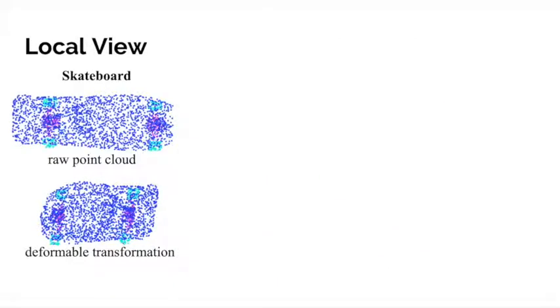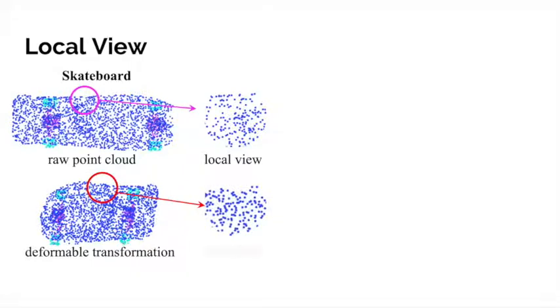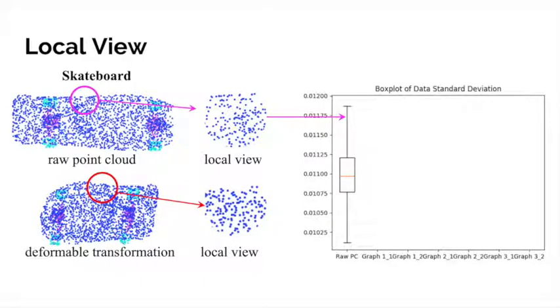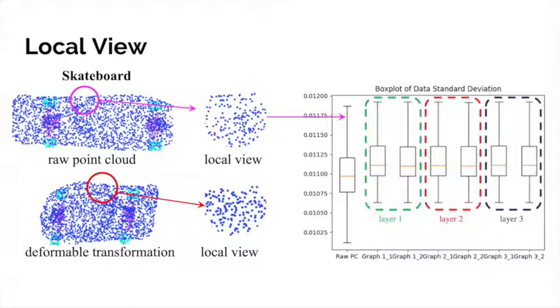We also provide a local view of the transformation. When zooming in, we find the raw point cloud is actually imbalanced. This can be hard for neighbor search based on k-nearest neighbors. With our deformable transformer, the point cloud becomes more balanced. The box plot showing the variance of data also suggests that transformation helps reduce the variance of data.